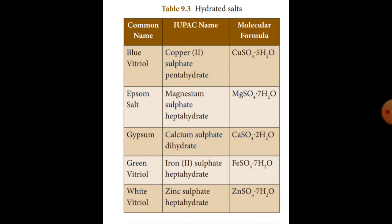Calcium sulfate dihydrate — CuSO₄·2H₂O. Then green: iron(II) sulfate heptahydrate. 'Hepta' means 7 — FeSO₄·7H₂O.